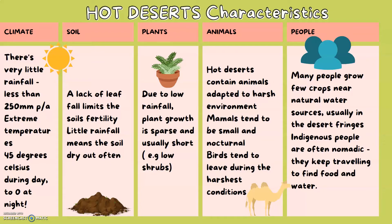Due to low rainfall, plant growth is sparse and usually low and short — for example, low shrubs. Hot deserts contain animals adapted to harsh environments; mammals tend to be small and nocturnal, and birds tend to leave during the harshest conditions. Many people grow few crops near natural water sources, usually on the desert fringes. Indigenous people are often nomadic, continually traveling to find food and water.